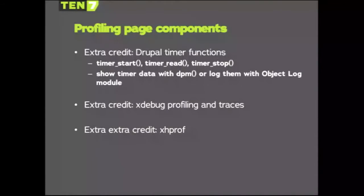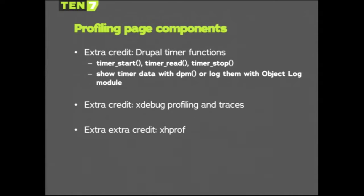When using those timing functions, it's helpful to have something like Devel module and its DPM functions so you can see the timing results printed at the top of the page. If you prefer not to see them directly on the page, you can store them with a module called Object Log — a module I wrote — which takes results that would otherwise go to a DPM call and prints them to a table in your admin interface for later review, preventing you from polluting the page output. It's also useful for getting information on variables outside a normal page request context, like cron runs or server-to-server requests.